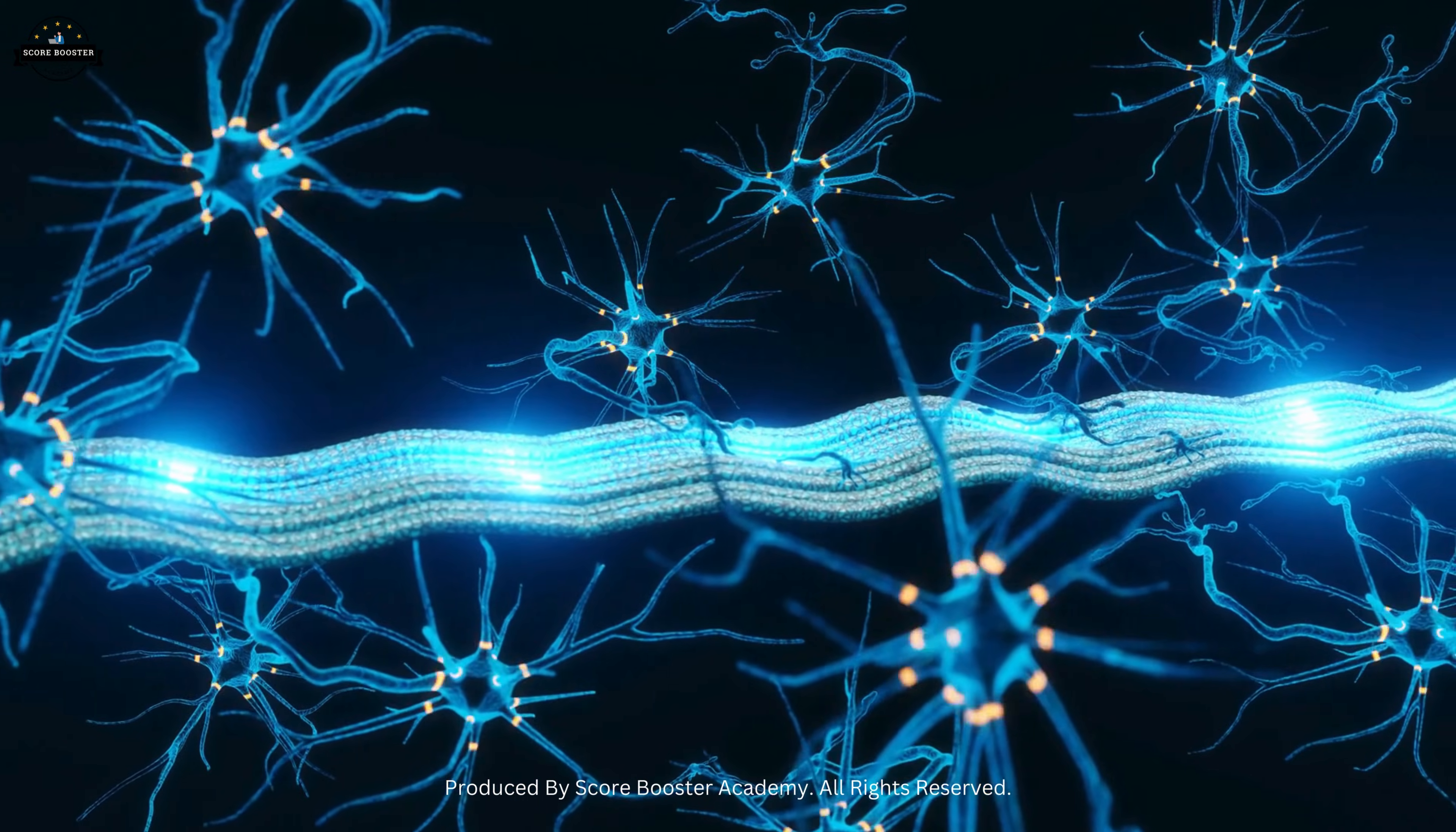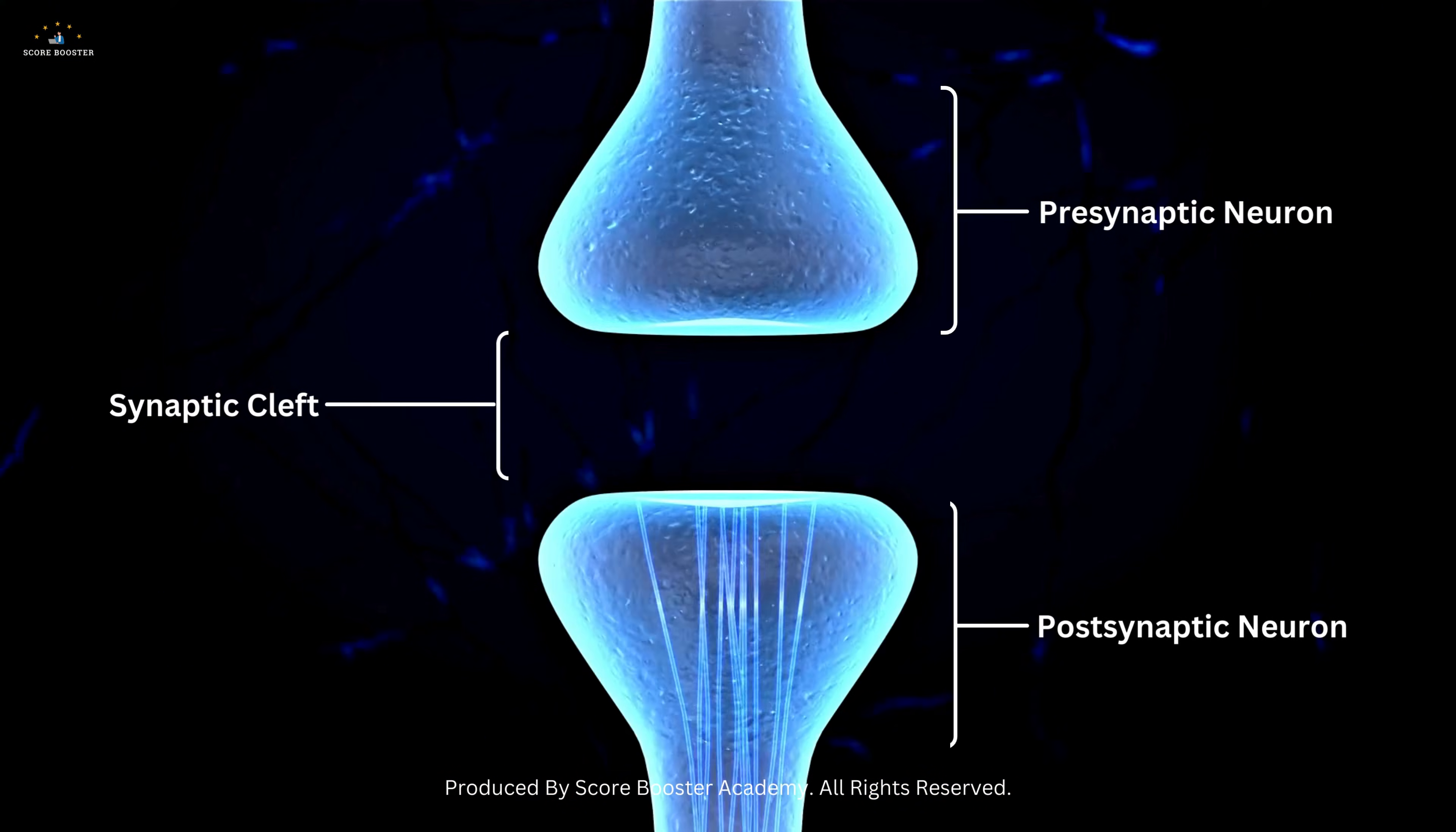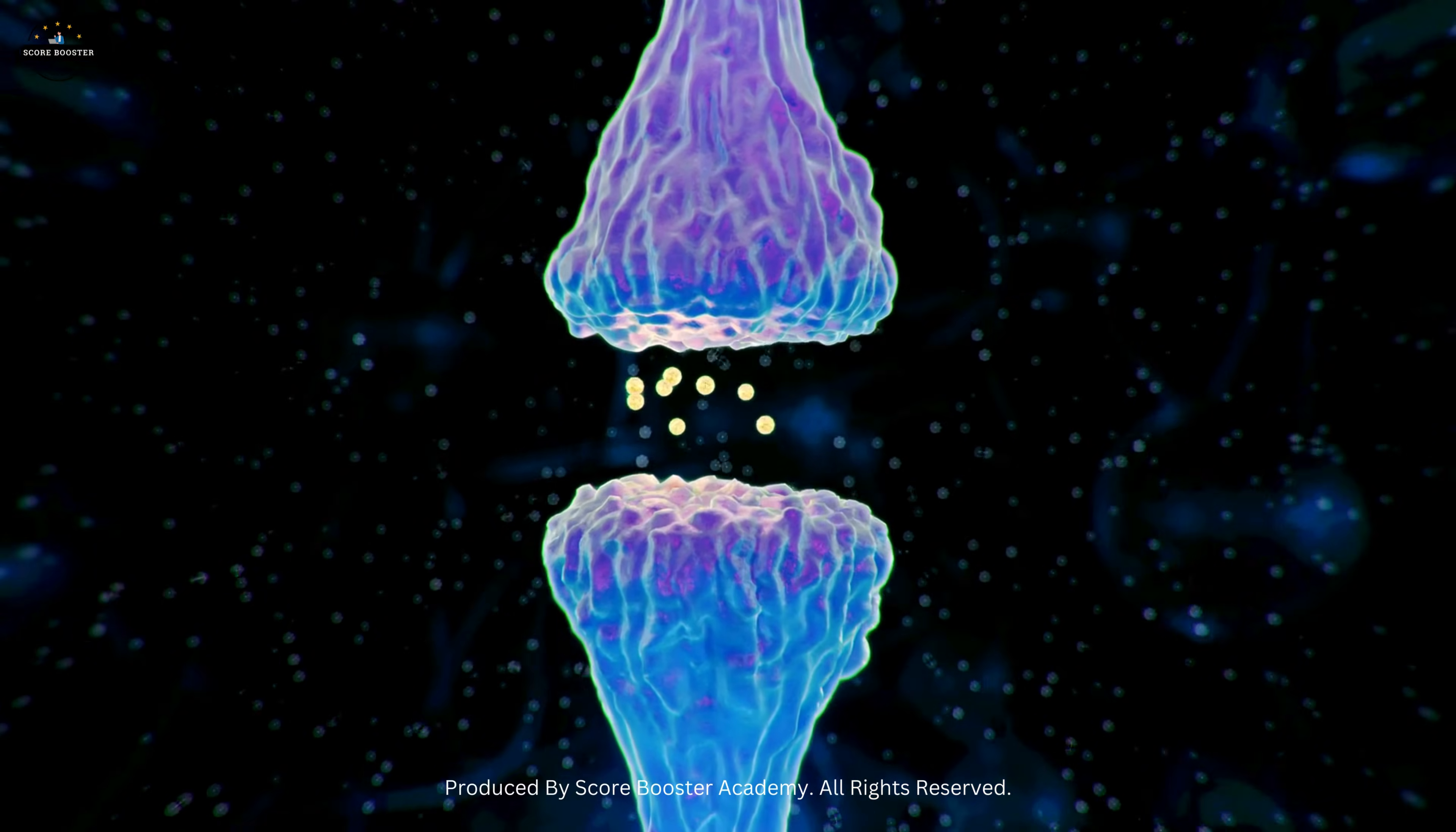A crucial element in this process is the synapse, the junction where the axon terminal of one neuron meets the dendrite of another. Neurotransmitters, chemicals released by neurons, cross the synapse to transmit signals.